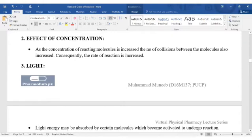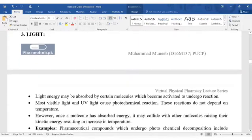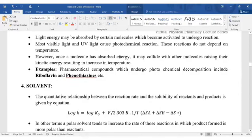Then effect of concentration. So by increasing the concentration of reacting molecules, the number of collisions also increases, so rate of reaction is increased. Next is light. So light may be absorbed by certain molecules which will be activated and initiate reactions. So usually visible light is involved. These reactions do not depend on temperature; they are just dependent on the light. However, once a molecule has absorbed energy, the other molecules collide because of kinetic energy and temperature. So ultimately, the reaction rate is affected. For example, some pharmaceutical compounds undergo photochemical decomposition, like riboflavin and phenothiazine.